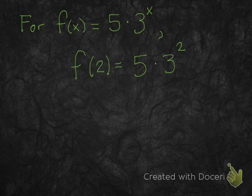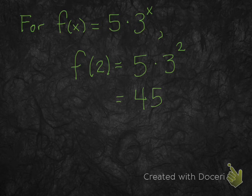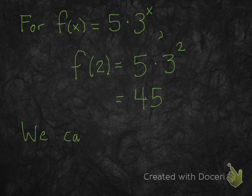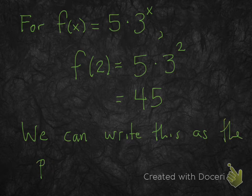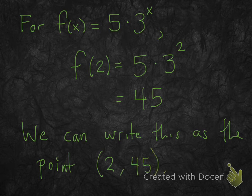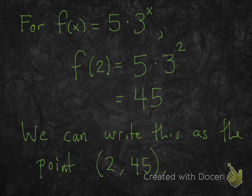So let's take a look at this function, 5 times 3 to the x. Now let's see what f of 2 is. That just means plug in 2 for x. So you get 5 times 3 squared, which is 45. Now, if you wanted to write this as a point, you could. 2 is the x, and 45, the number that you get out of the function, is always the y value. So if you wrote it as a point, it would be 2 comma 45.